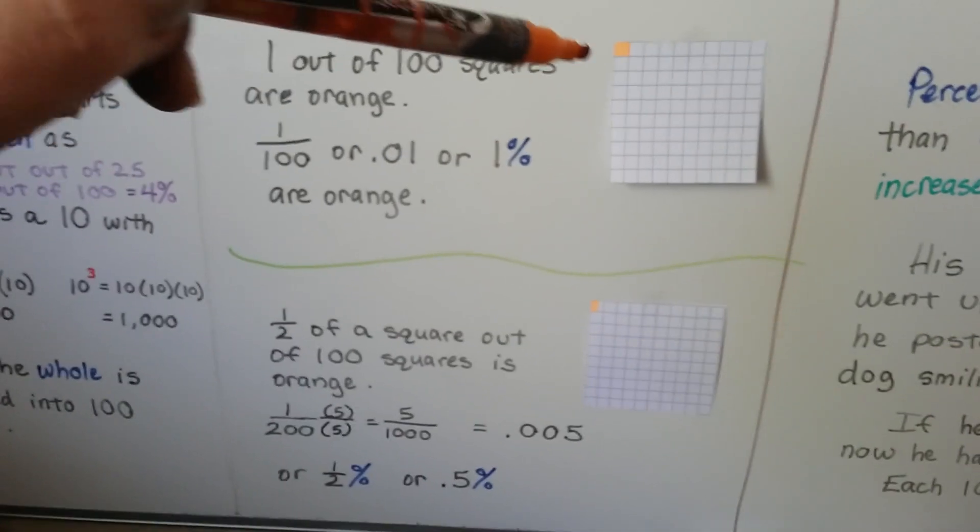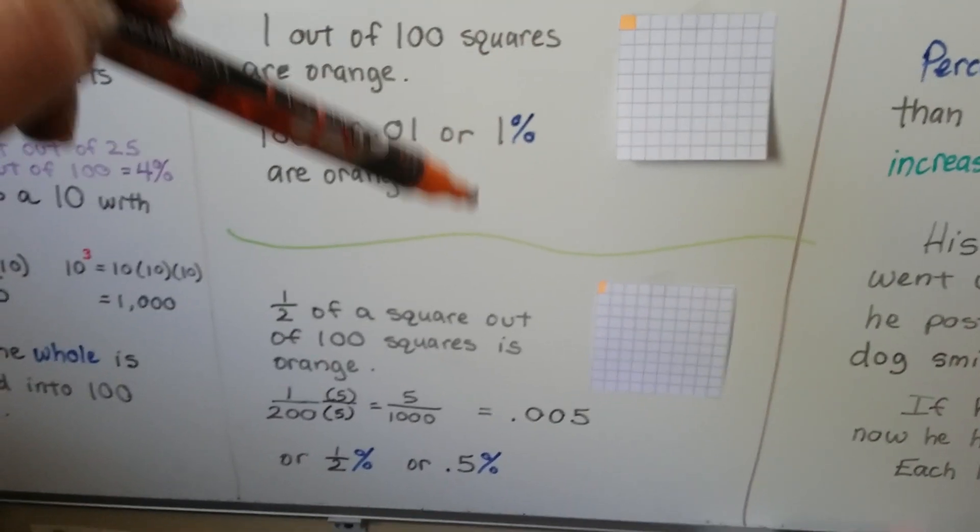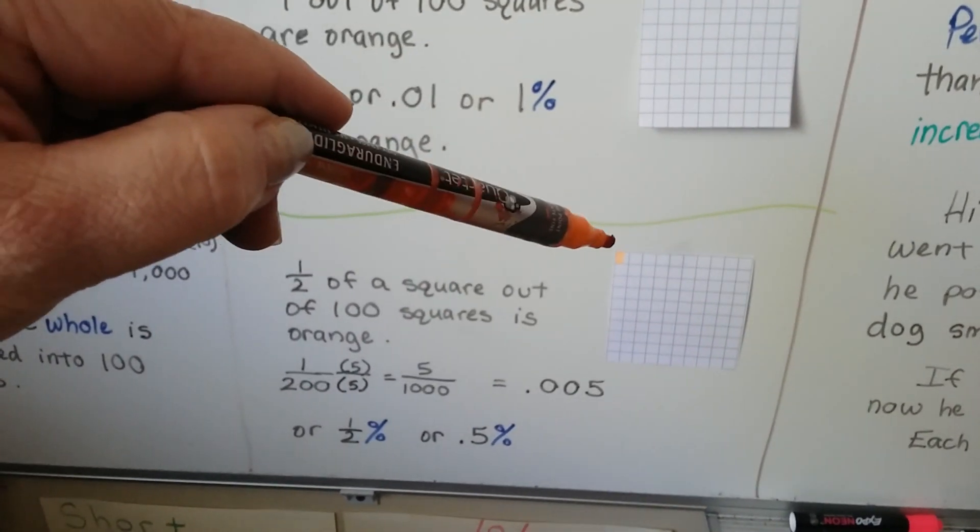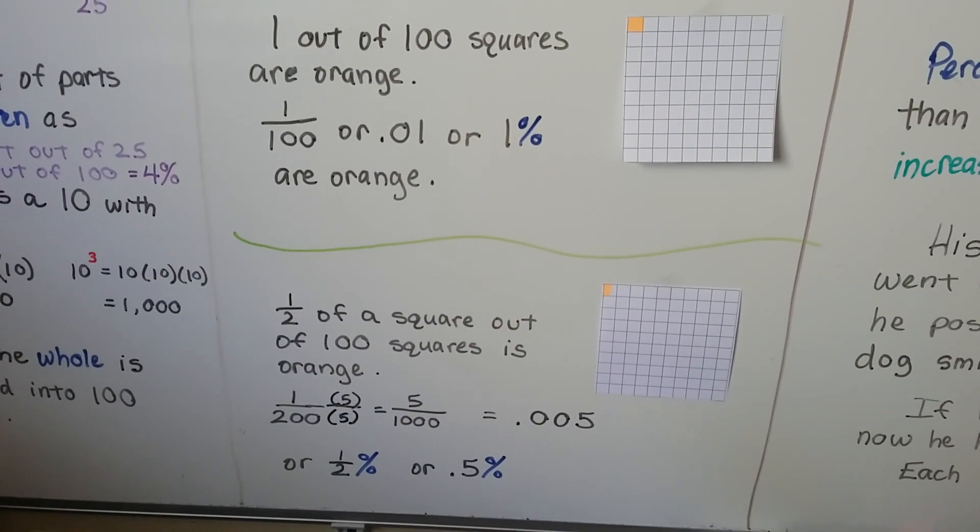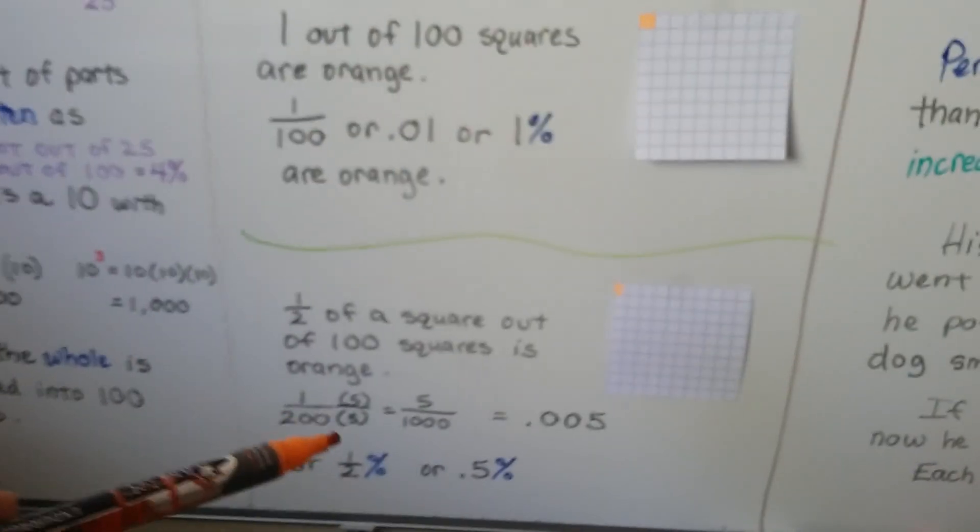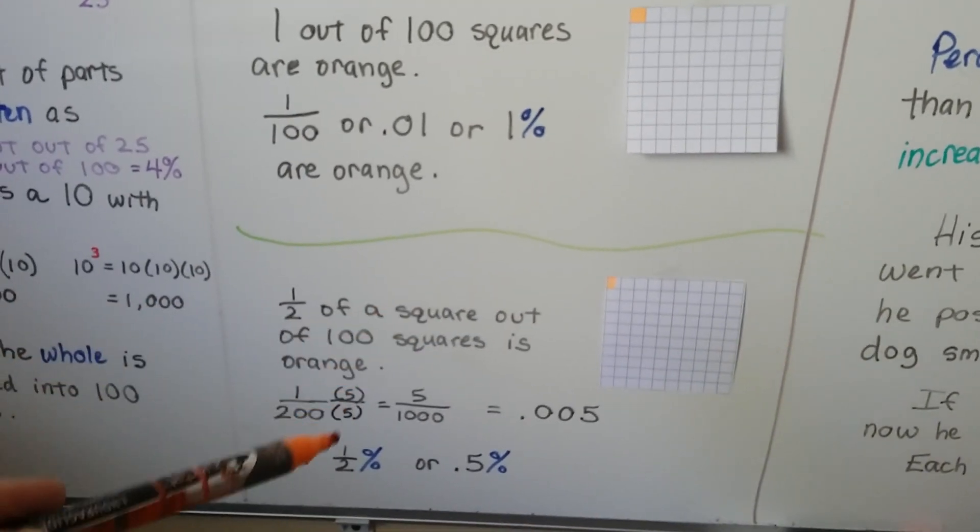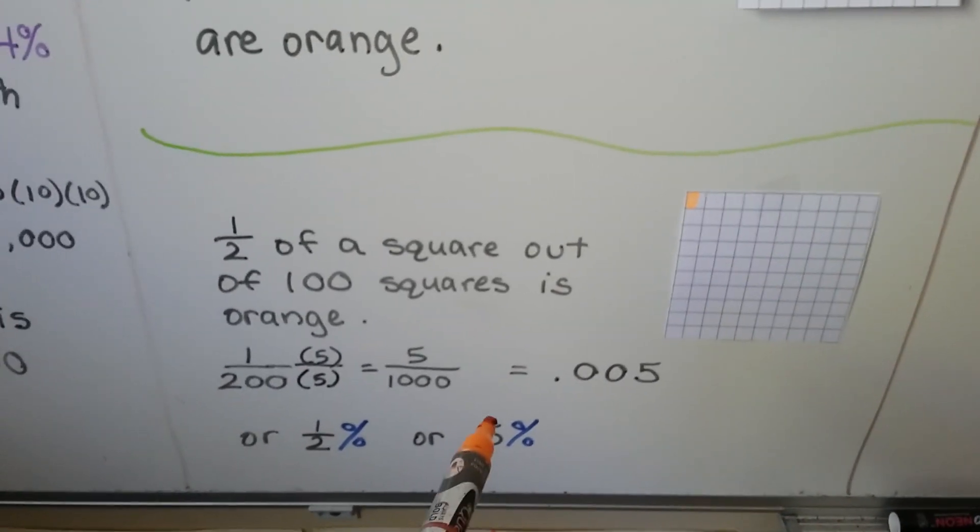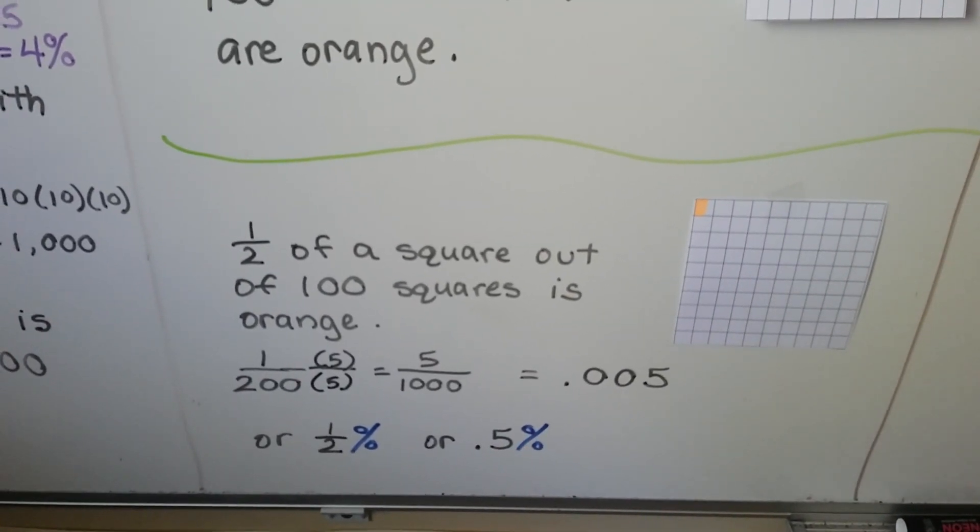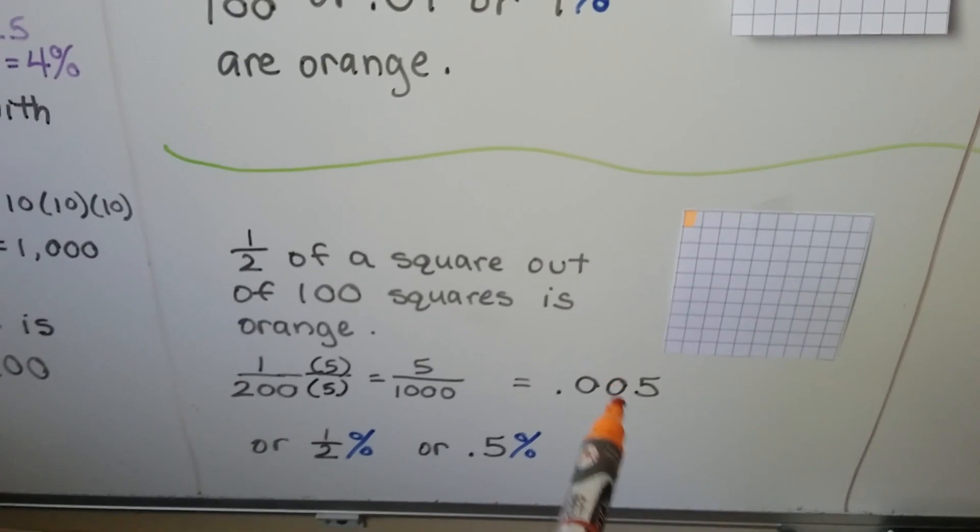That means a half of a percent is orange or 0.5%. Now we have a decimal point and a percentage sign. Because we went from 1% to half of a percent. Only half the square is filled in compared to one whole square. So if one whole square is 1%, then half of the square is half of 1%. And we would write it with a decimal point and the percentage sign. Because it's 0.005.